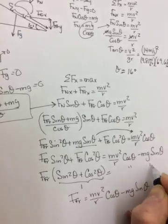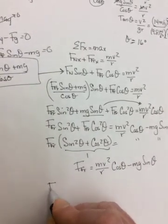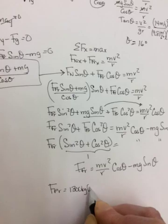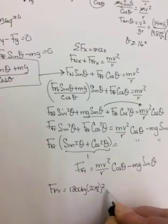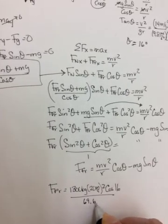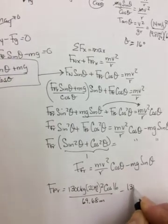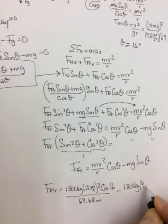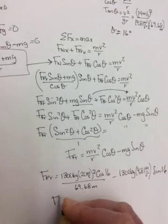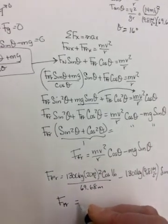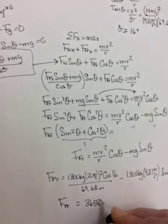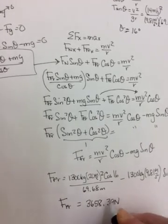So you'll have friction is equal to mv squared over r cos theta minus mg sine theta. And now you can fill your numbers in. So friction equals, the mass was 1,300 kilograms going around at 20 meters per second squared, cos of 16, divided by 69.68 meters minus 1,300 kilograms times 9.81 meters per second squared, sin of 16.